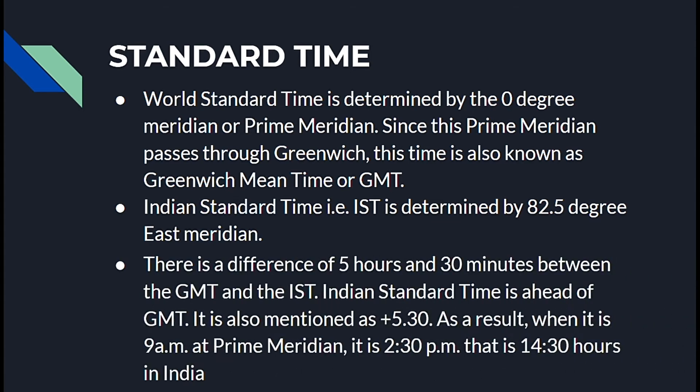There is a difference of 5 hours and 30 minutes between GMT and IST. Indian Standard Time is ahead of GMT, and it is also mentioned as plus 5:30. As a result, when it is 9 a.m. at the prime meridian, it is 2:30 p.m. in India.